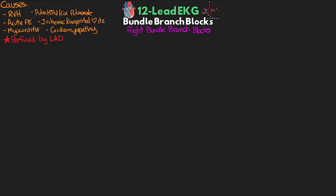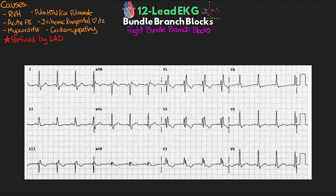Here's our first example of a 12-lead with a right bundle branch block. Starting by measuring our QRS duration — looking at V2, it's somewhere between three to four small boxes, making this a wide QRS. Looking at V1, we can see the classic rabbit ears or M shape typical of right bundle branch block. The terminal wave is positive — using our turn signal flipped up, we're turning right, thus right bundle branch block. We also have appropriate T wave discordance with a negative T wave deflection. In V6 and lateral leads 1 and AVL, the terminal deflection is negative, opposite of the positive terminal deflection in V1.